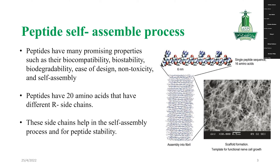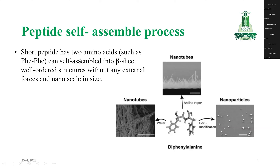Amino acids in nature are all different in their side chains, and these side chains help in the self-assembled process for peptide stability. Here is an example of a peptide that shows how it self-assembles and forms a nanofiber structure. There is also another example of a peptide that contains just two phenylalanine residues and self-assembles into different structures depending on the environment.